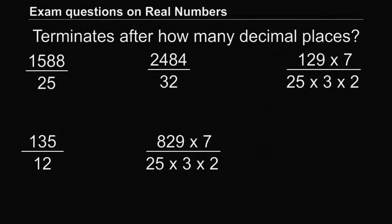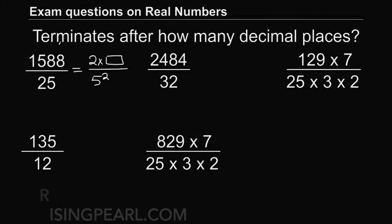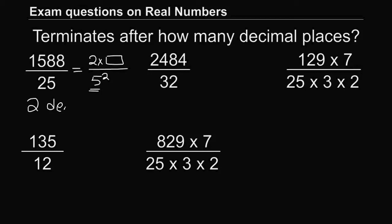Going back to the first problem: the denominator is 5^2, and the numerator is 2^2 times something. The numerator does not have 5 as a factor, since it ends with an even number and not 5 or 0. So 5^2 stays as is, and this decimal expansion will terminate after 2 decimal places.